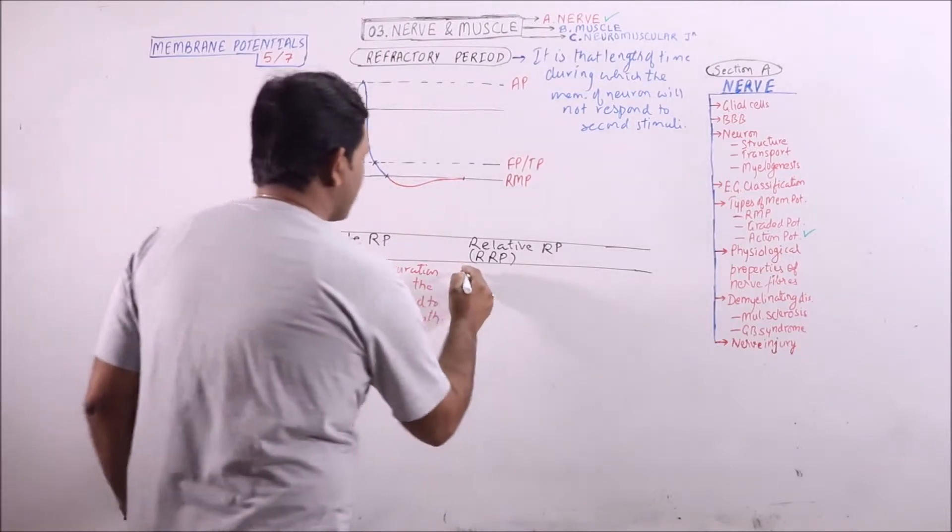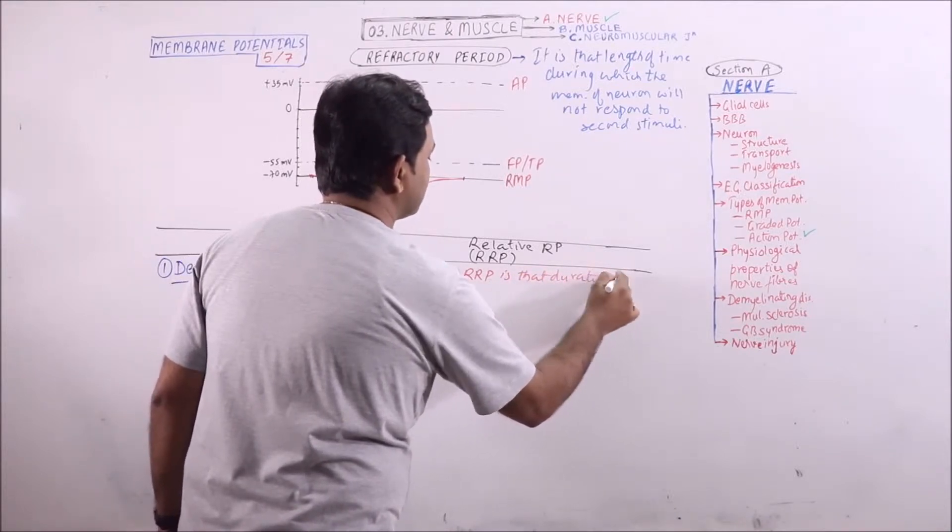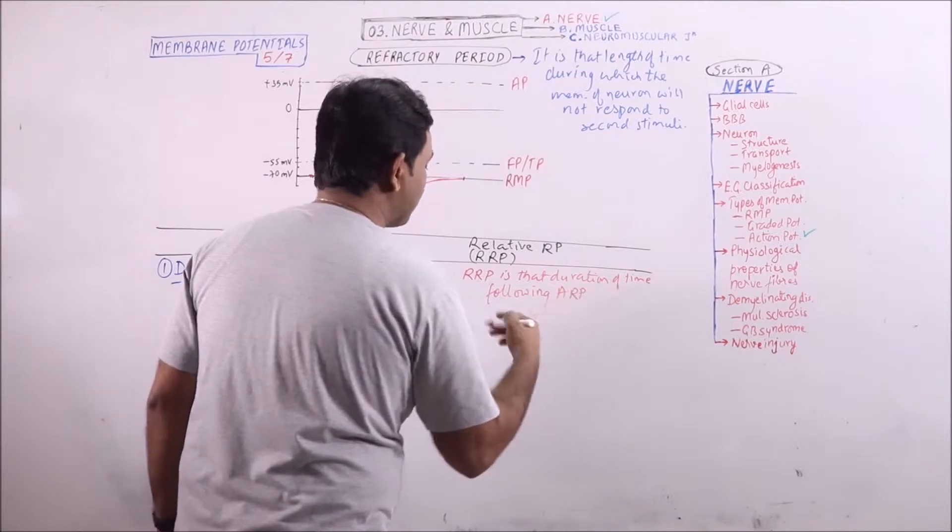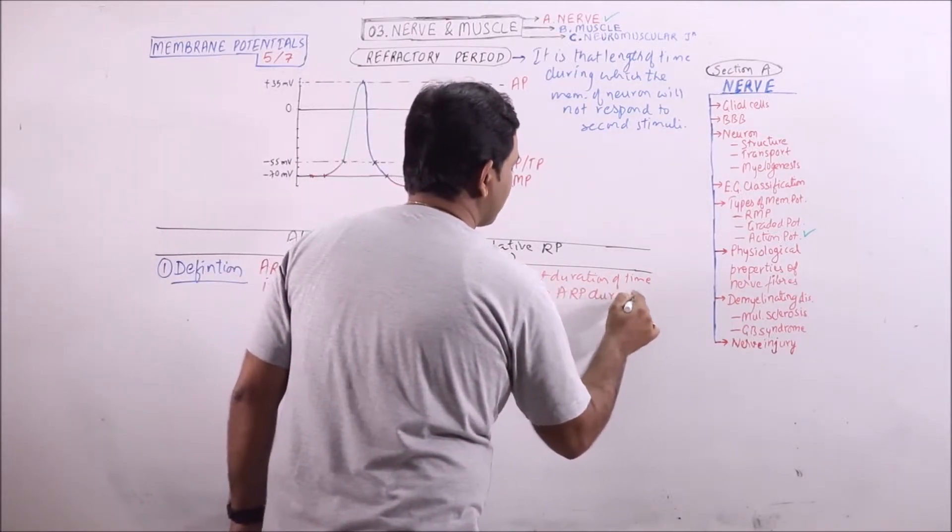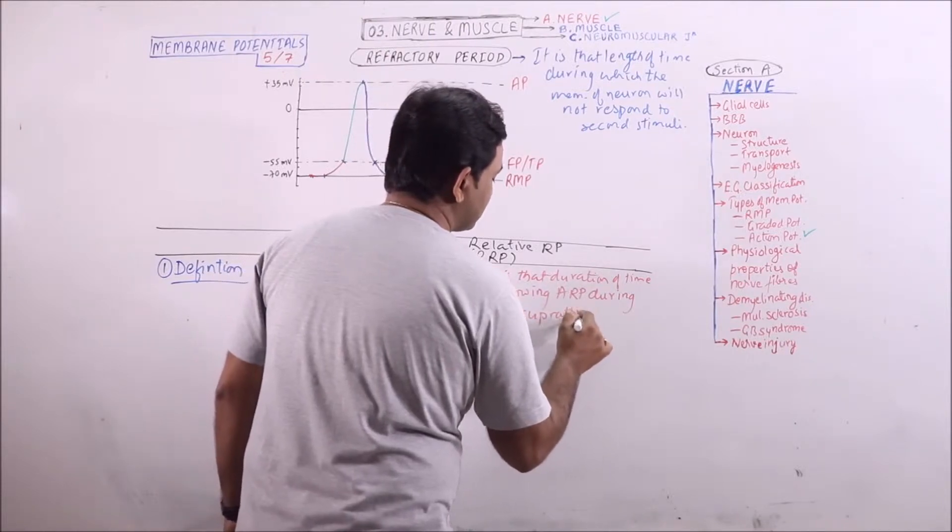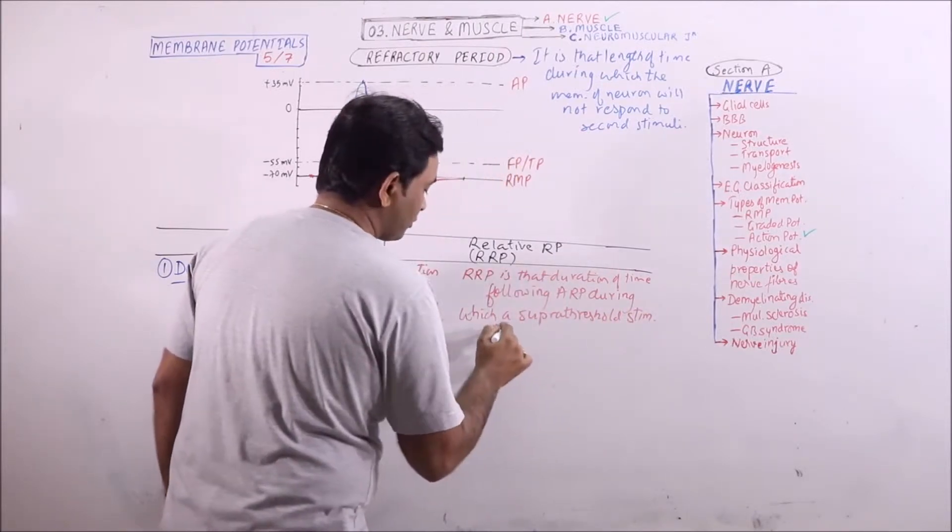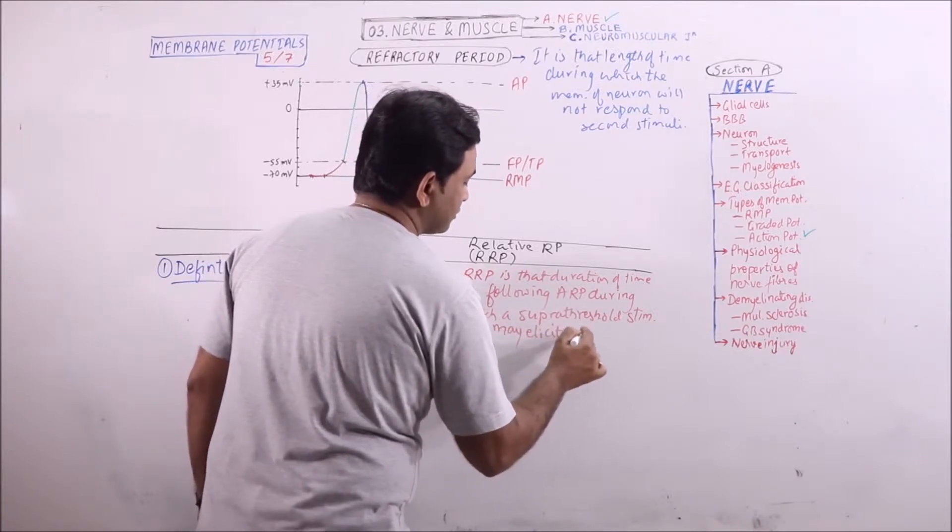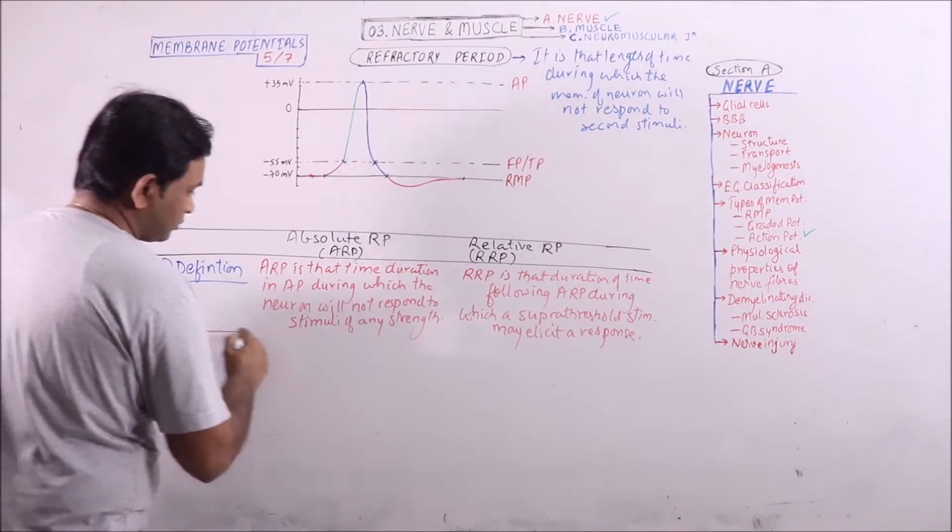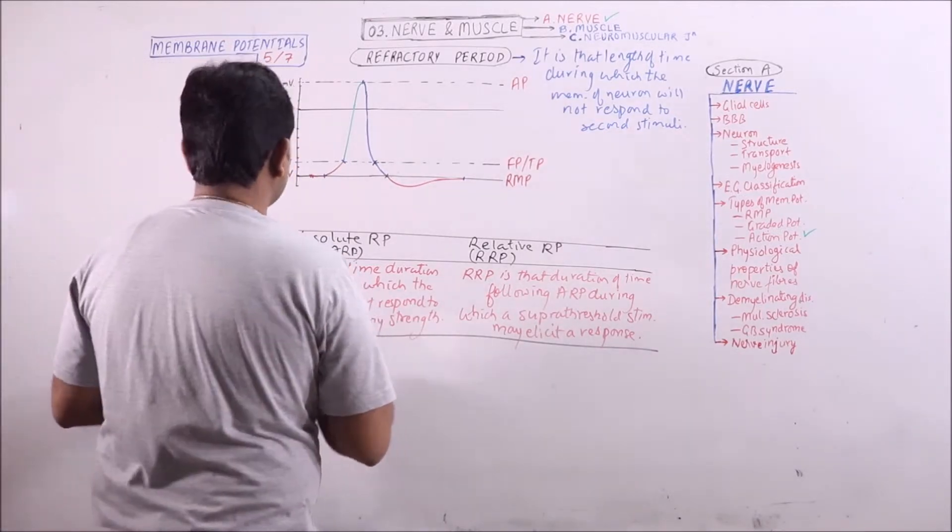While relative refractory period is that duration of time following ARP, that is after ARP, during which a supra threshold stimulus may elicit a response.